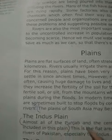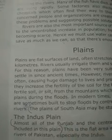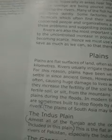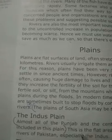The plains of South Asia may be studied as follows. The first one is the Indus Plain. Almost all of the Punjab and the central area of Sindh are included in this plain. This is the flat area which lies close to the rivers of Pakistan, especially the Indus — including rivers like Ravi, Chenab, Sutlej, Jhelum, and the Indus.